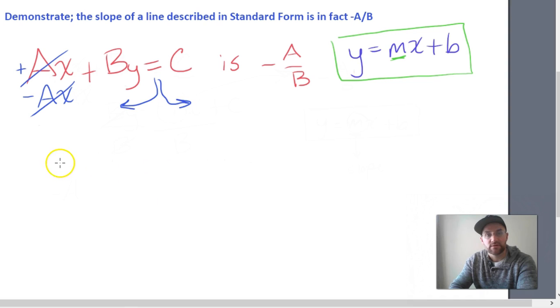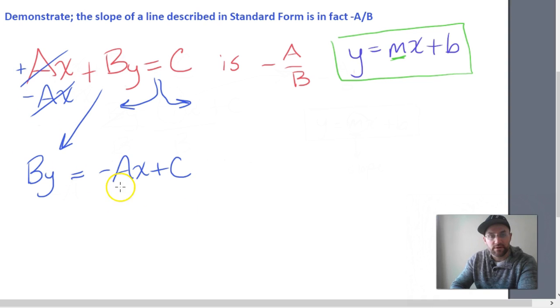So we end up with By equals negative Ax plus C. Now we can't jump to a conclusion and say, well, here's our coefficient to x, there's our slope, because that doesn't seem to jive with negative A over B since we still have a B attached to this y. Some variable attached to that y.